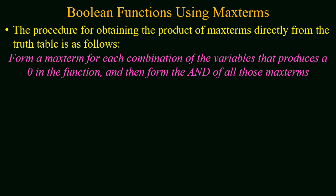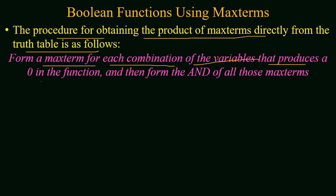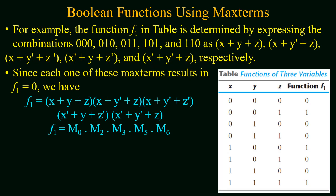Now we will study how to make a boolean function using max terms. The procedure for obtaining the product of max terms directly from the truth table is as follows: make a max term for each combination of the variables that produces 0 in the function output, then combine all these max terms using the AND operation or boolean multiplication. For the same function f1, we first identify all binary combinations for which the output function has a value of 0.